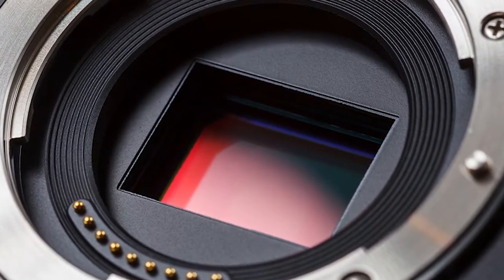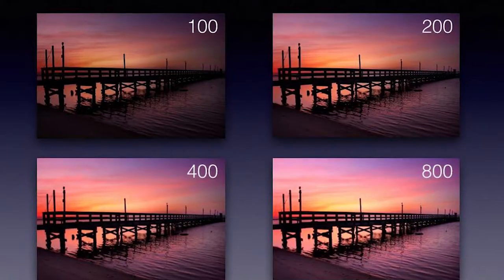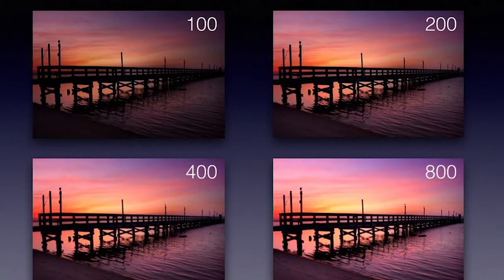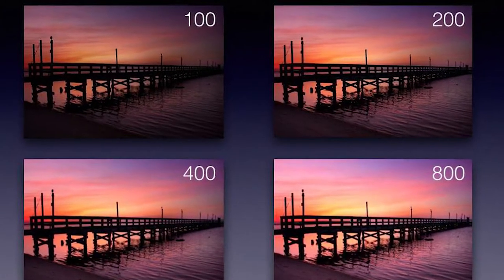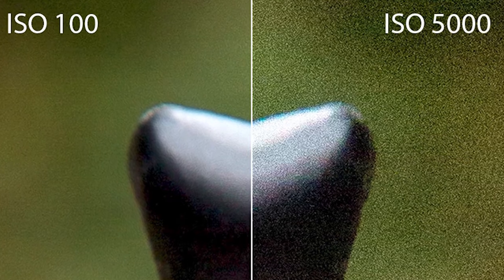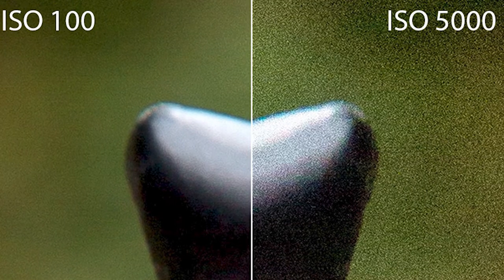Inside your camera you can change the ISO settings — you can raise it and you can lower it. If you raise your ISO, you're going to get brighter images. The sensor is going to get more sensitive to the incoming light and it's going to boost your exposure up. Wherever there is a low light environment, you can boost your ISO up. But if you boost your ISO, there is another factor that starts to come into play, and that is the grain.